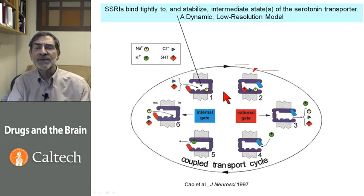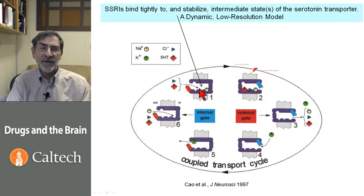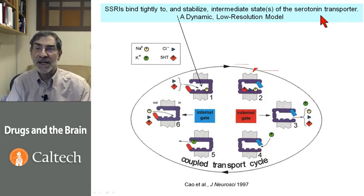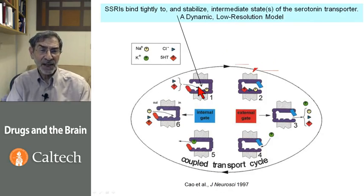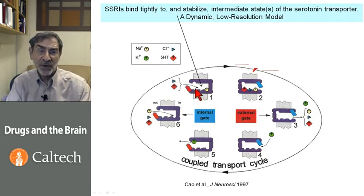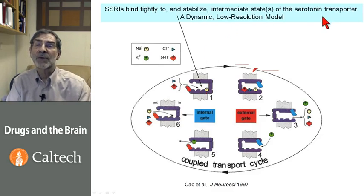We're not sure that this plays any role in normal or even abnormal operation of neurotransmitter transporters. Quite importantly, various experiments have concluded that SSRIs and other blockers bind tightly to and stabilize intermediate states of neurotransmitter transporters — getting them stuck at a particular part of the transport cycle, sometimes with one or more substrates present. This is what prevents the transporter from functioning when the blocker is present.